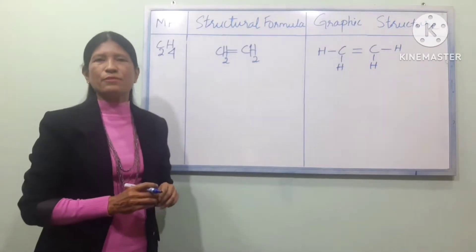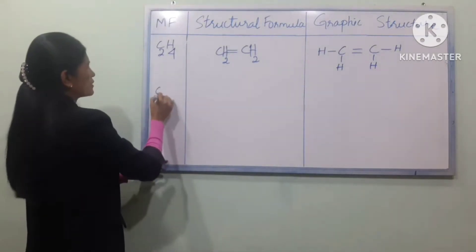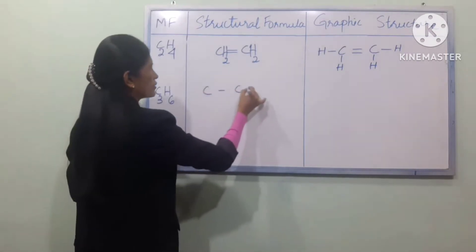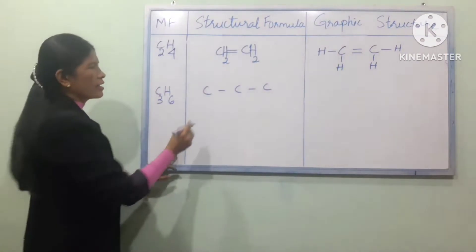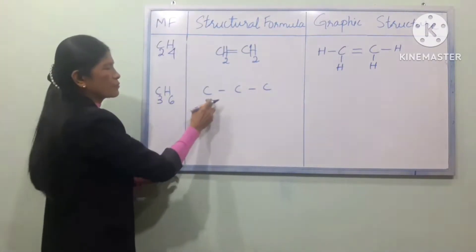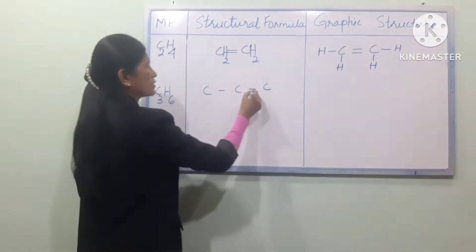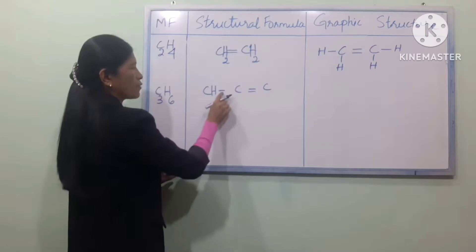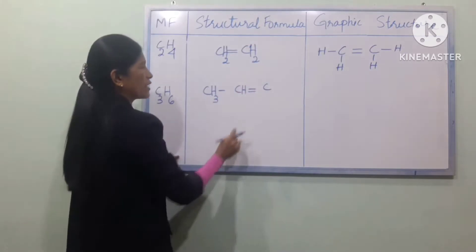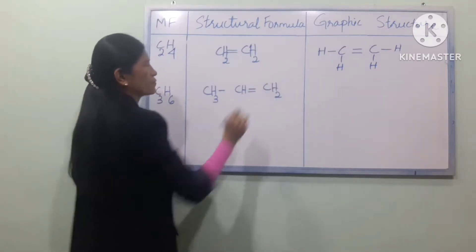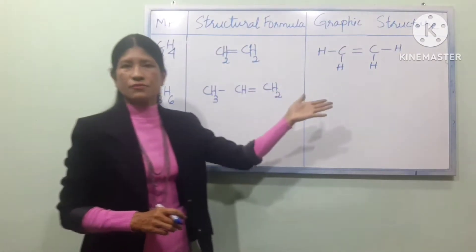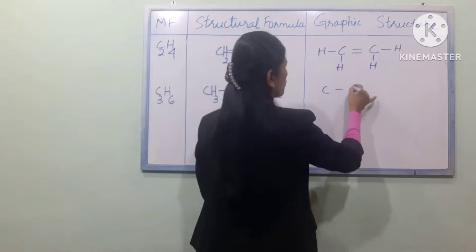For C3 — this is C3, propene. If you want to draw C3, you number the carbons 1, 2, 3. Sketch the carbon chain and mark the double bond position. This gives us the structural diagram.